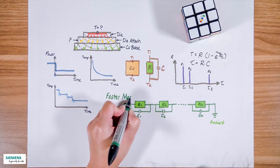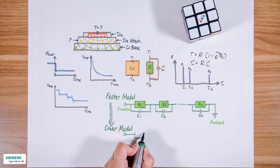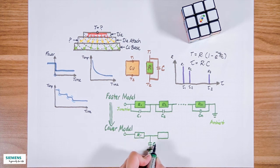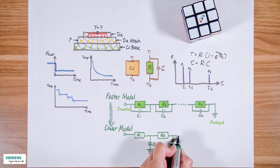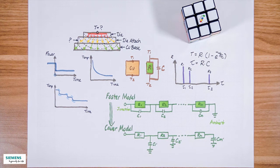the Foster model can be transformed into the Cower model, which carries the same information but can be read as a physical model of the real structure. The elementary heat capacitances are not parallel with the elementary heat resistances. Instead, all refer to the ambient.